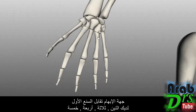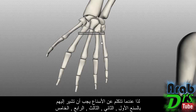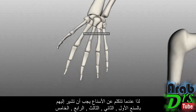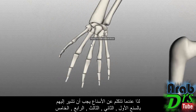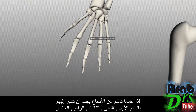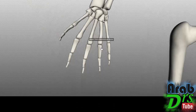The thumb side is the first metacarpal, and you've got 2, 3, 4, 5. So when referring to metacarpals, you refer to them as the first, second, third, fourth, and fifth metacarpal.